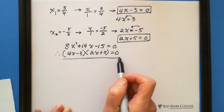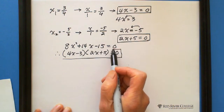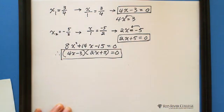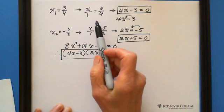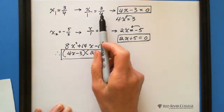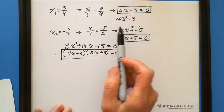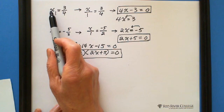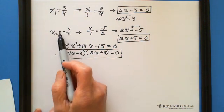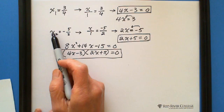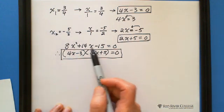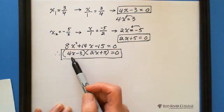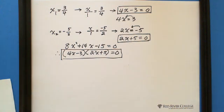Until this point, we're done. Later on, if you're familiar with this process, you can look at x equals 3 over 4 and directly write 4x minus 3, and x equals negative 5 over 2 gives 2x plus 5. This is the way to use a calculator to help you factor. Thank you.